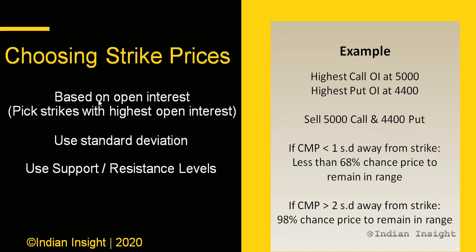How do you choose strike prices for your short strangle? One simple way is based on open interest: pick the call strike with the highest open interest, which represents a resistance level, and the put strike with the highest open interest, which represents a support level. I have a video on how to use open interest that I'll link to, but this is one simple way of choosing your strike prices.